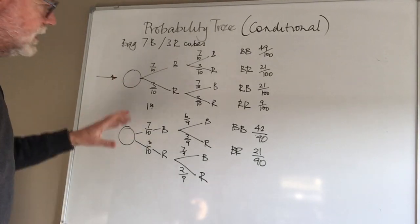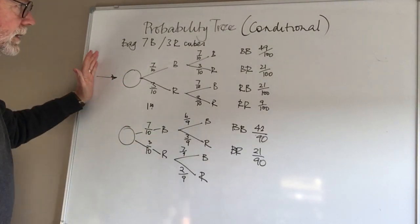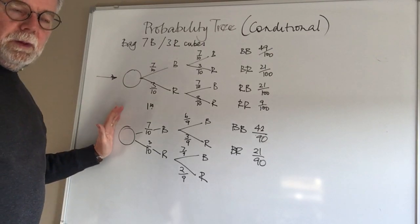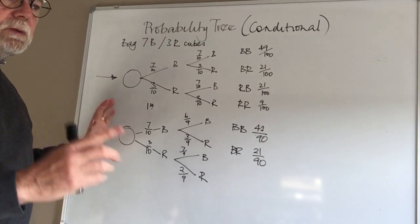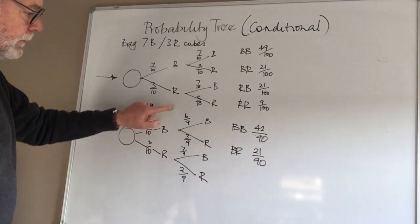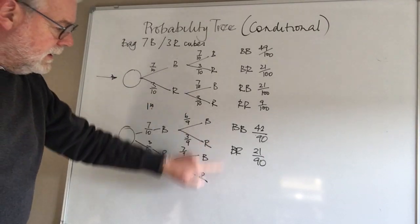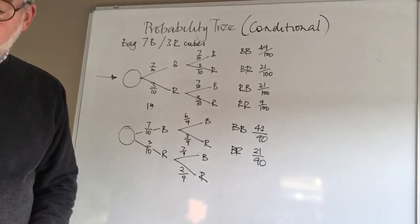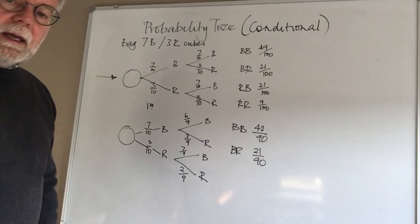And notice the difference between standard probability trees and conditional probability trees. The big difference is when we put something at one side, that has to be reflected in our second or even third event. That's it.